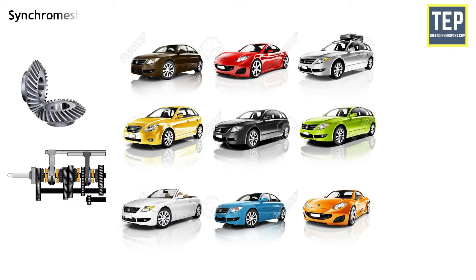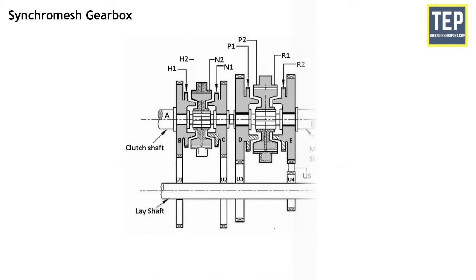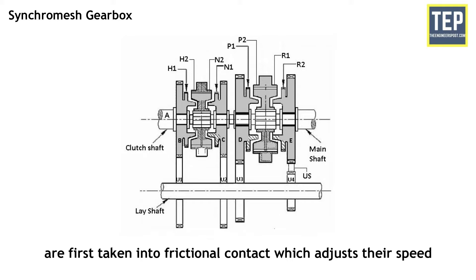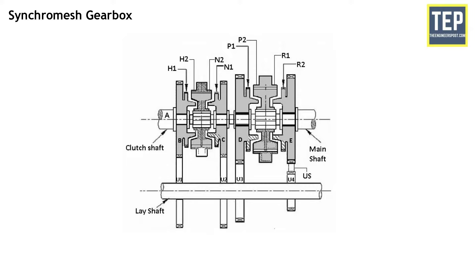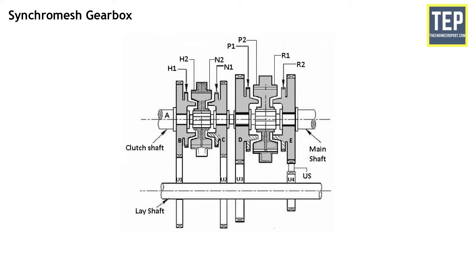Modern cars use helical gears and synchromesh devices in the gearboxes that synchronize the rotation of gears that are about to mesh. This eliminates clashing of gears and makes gear shifting easier. The synchromesh gearbox is similar to the constant mesh gearbox, but is provided with a synchromesh device by which the two gears to be engaged are first taken into frictional contact, which adjusts their speed, after which they are engaged easily. In most gearboxes, synchromesh devices are fitted only on the top gears. In some cases, the first gear and reverse gear do not have synchromesh devices, because they are intended to be engaged when the vehicle is stationary.